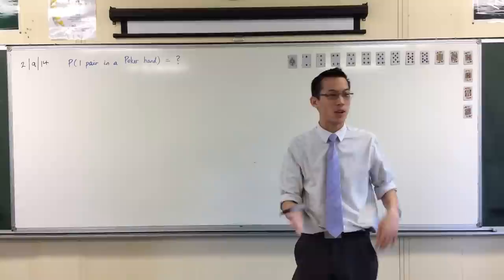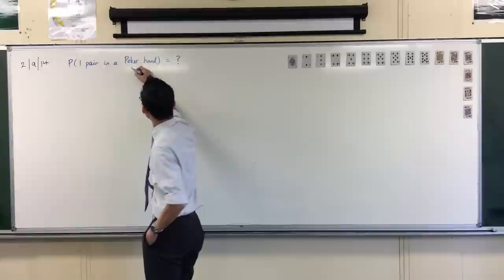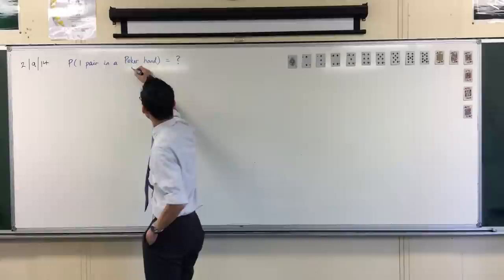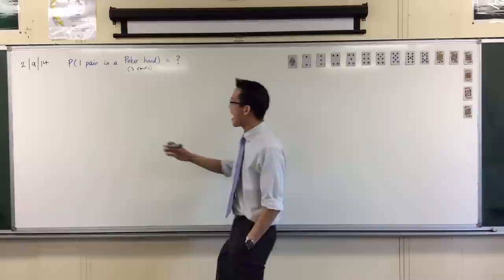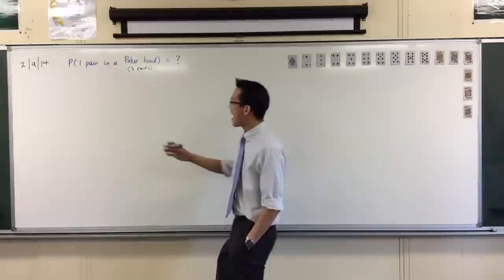We're playing poker. In a hand for poker, it is called a hand because there are five cards. So this question is, if you get given five cards, what's the probability that in the hand you'll have one pair, and exactly one pair?